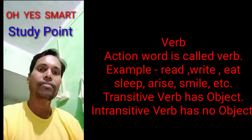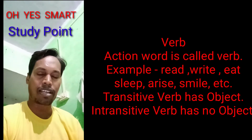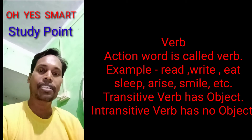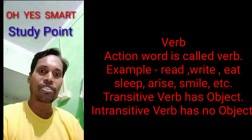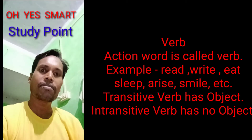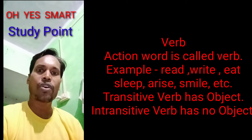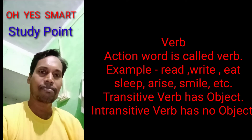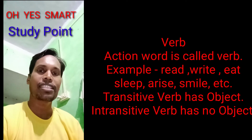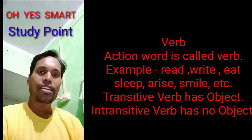Verb has two types: transitive verb and intransitive verb. Transitive verb is a verb which has an object. For example, 'I have read my book' — here read is a transitive verb because it has the object 'my book'. Intransitive verb is a verb which has no object. For example, 'he writes' — here writes is an intransitive verb because no object is present.